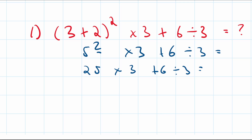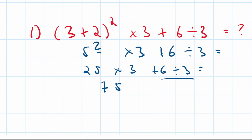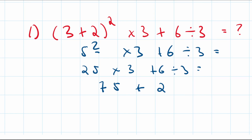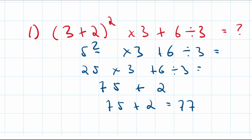Next in priority are division and multiplication. Reading left to right, 25 multiplied by 3 comes first, giving 75. Then 6 divided by 3 gives 2. These can be done concurrently. Finally, addition is last in our priority, so 75 plus 2 gives us 77.